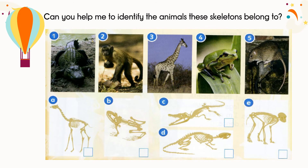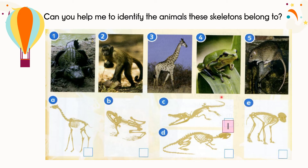Now, can you help me to identify this animal's skeleton? Let's look at picture number one. What animal is this? Yes, you're right — it's a crocodile. Which skeleton shows the crocodile's skeleton? Is it A? No. Is it B? Is it C or D? Or E? Very good. It's C.